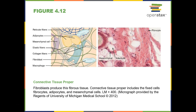Reticular fibers are very structural fibers that help to provide a framework for specific organs, mainly your lymphatic organs like your lymph nodes and your spleen — the structure of those organs is made by reticular fibers. Then we have elastic fibers. Elastic fibers are thinner fibers whose function is to provide slight elasticity so that materials can bend and snap back to their original shape.